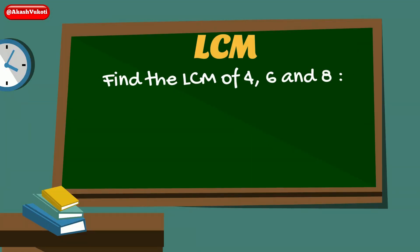So far we've looked at finding the LCM of two numbers. But what if we wanted to find the LCM of three numbers? Well, the procedure is nearly the same, just adding another digit in the mix. So let's say we want to find the LCM of 4, 6, and 8.